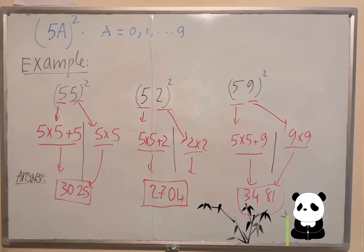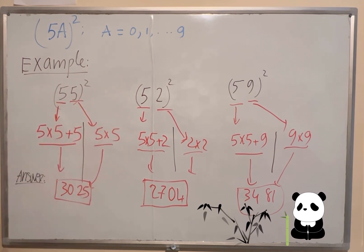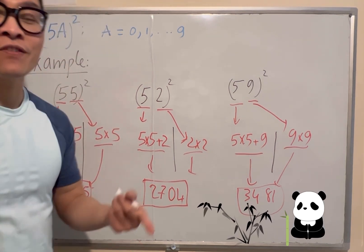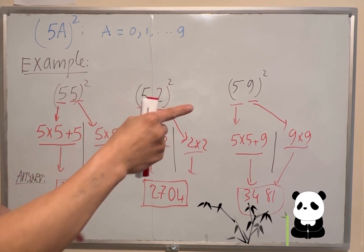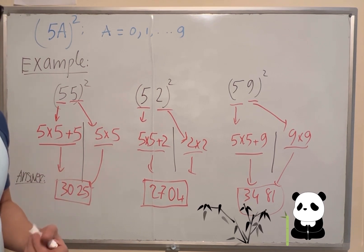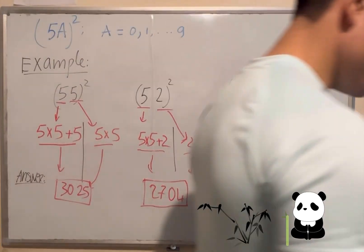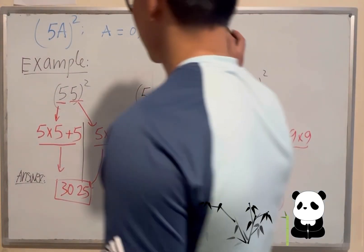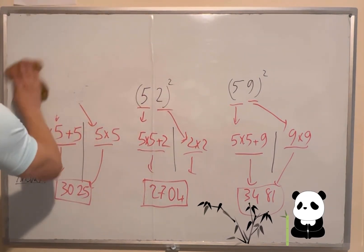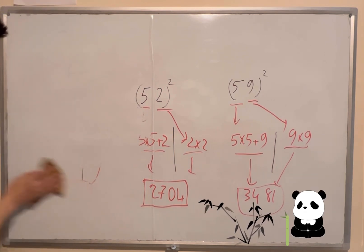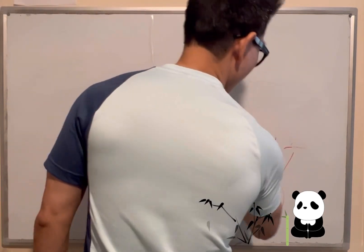Now, with any question you can do it very quickly. For example, 54 squared: 5 times 5 is 25, plus 4 equals 29. Then 4 times 4 is 16. So the answer is 2916. I will now give you another pattern — a two-digit number where the second digit is 5.